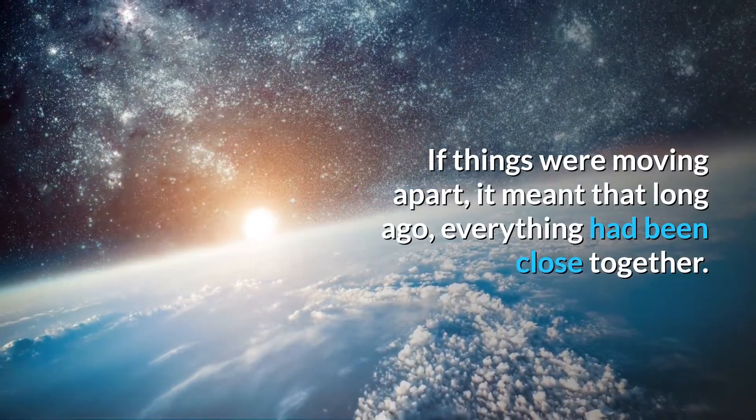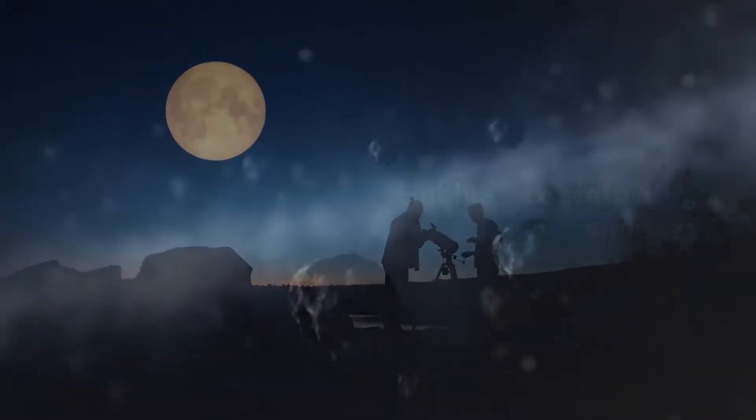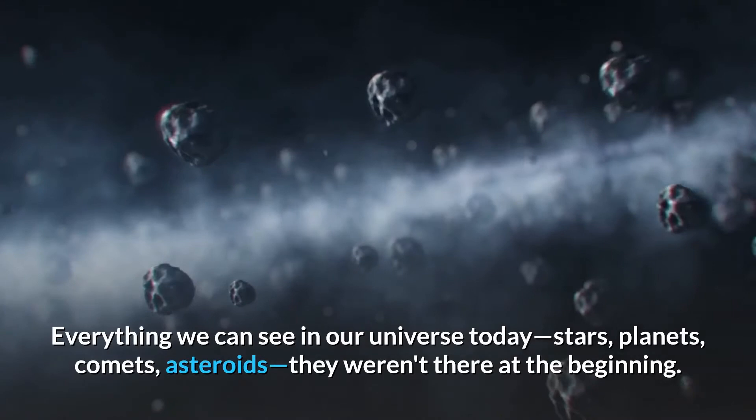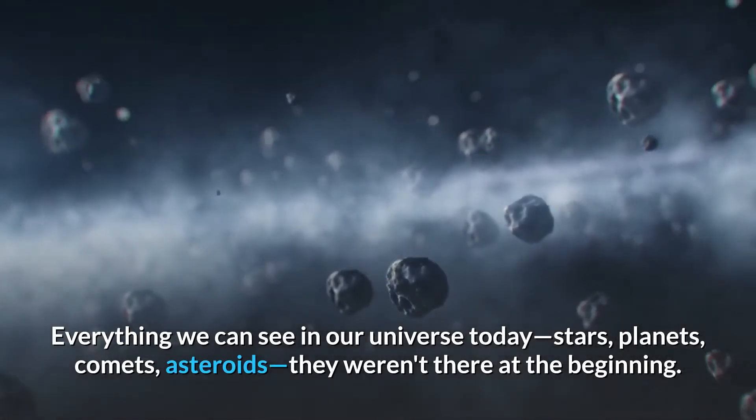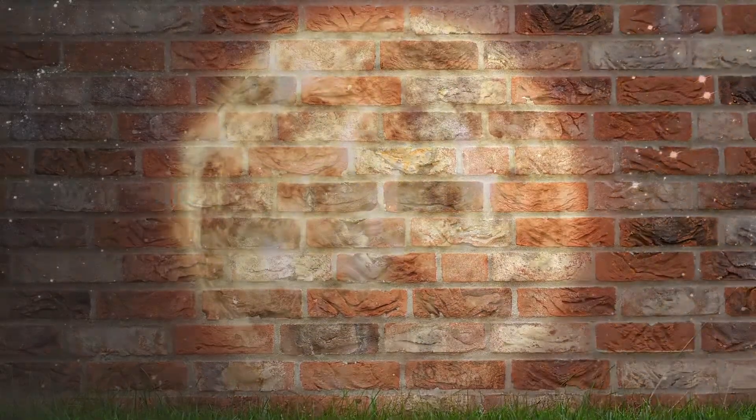If things were moving apart, it meant that long ago everything had been close together. Everything we can see in our universe today - stars, planets, comets, asteroids - they weren't there at the beginning. Where did they come from?